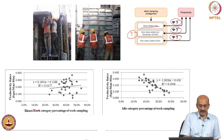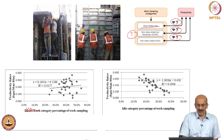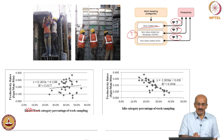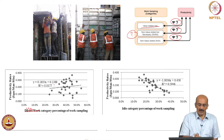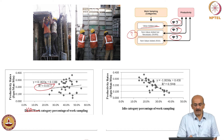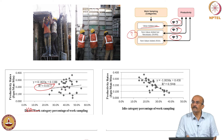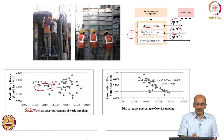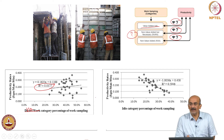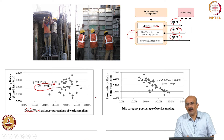So direct work is actually value added in work sampling. You can see that as value added increased, the dots show the actual productivity measurement and the line shows the best fit. The R-square shows the coefficient of regression. What do you think of this R? Not very good. We were not able to establish a strong correlation between direct work increase and productivity.